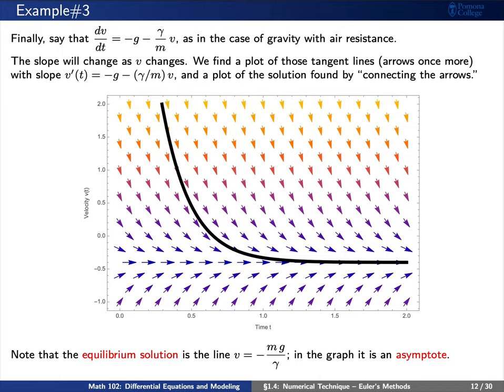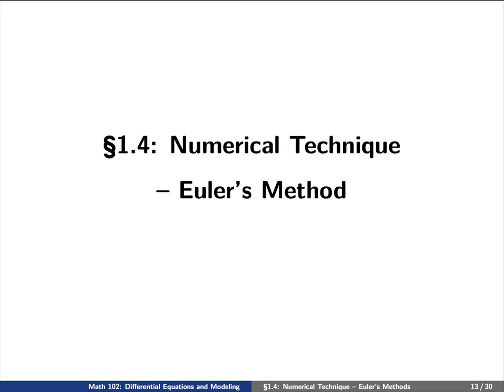Just like before, if we connect all of the arrows together, then we can find roughly a plot of the solution. Notice that exactly where the arrow is forming a line, where the slope is zero, we find the equilibrium solution. This graph corresponding to the equilibrium solution is, of course, an asymptote.